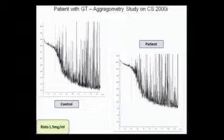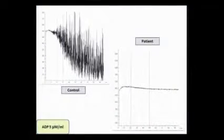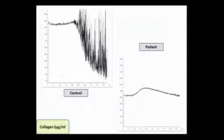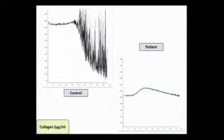I have a patient with Glanzmann's thrombasthenia, and this is on the CS2000. This is the response of the platelets to ristocetin, and you can see that in control platelets there was a response, and in the patient also there was a response — this pattern almost looks exactly like an aggregometry pattern. If I look at epinephrine, the control responds but the patient doesn't. ADP — the patient doesn't respond. And with collagen, you can also see the famous lag phase in the collagen aggregometry response, compared to the patient who doesn't have a response.